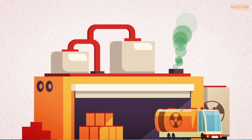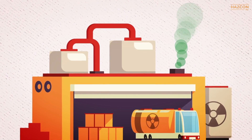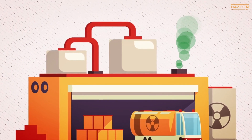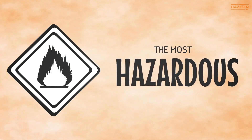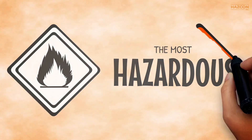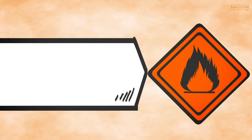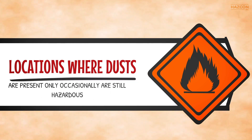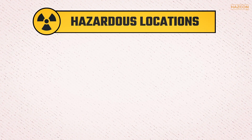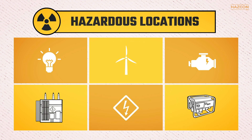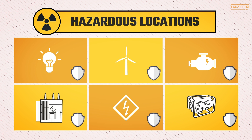Locations involving dusts are known to be hazardous because dusts can be combustible and flammable. Naturally, the locations where dust is present continuously are the most hazardous. Locations where dusts are present only occasionally are still hazardous, nonetheless. If electrical and non-electrical equipment is installed in such locations, the devices must be designed and constructed in compliance with safety standards specific to the nature of the hazard.